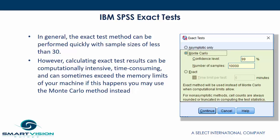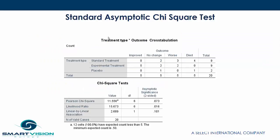Let's take a look at an example. We can see a standard asymptotic chi-square test with three different treatment types — standard treatment, experimental treatment, and placebo, of which there are only two occurrences — and four outcomes: improved, no change, worse, and died. The Pearson chi-square test indicates this is not a significant relationship using asymptotic significance, while the likelihood ratio indicates that it is, so we have some disagreement. Running an exact test will allow us to detect whether or not this is a statistically significant relationship.